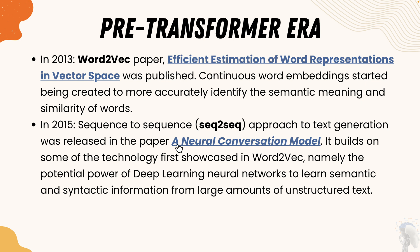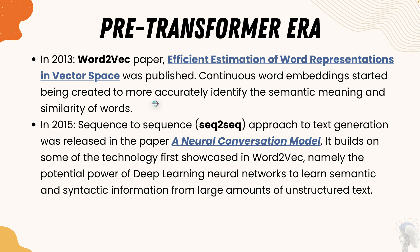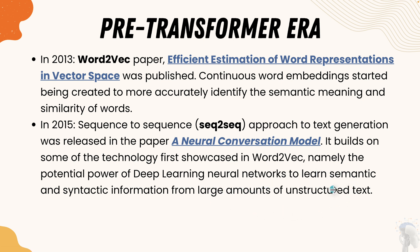In 2015, a sequence-to-sequence approach to text generation was released in a neural conversational model paper. Building on Word2Vec, this model harnessed the power of deep learning neural networks to learn semantic and syntactic information from large amounts of unstructured data. Where Word2Vec could handle a few paragraphs, the sequence-to-sequence approach could process much larger unstructured text and extract similarity and syntactic information — gaining significant popularity in 2015.